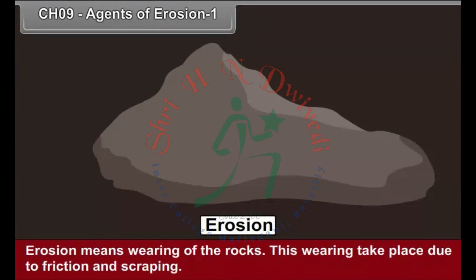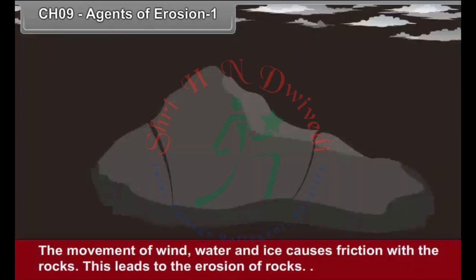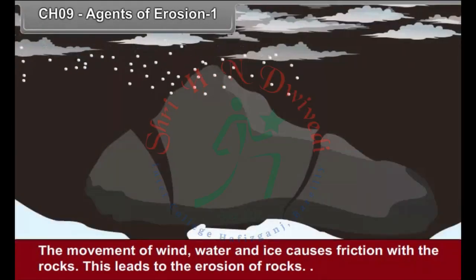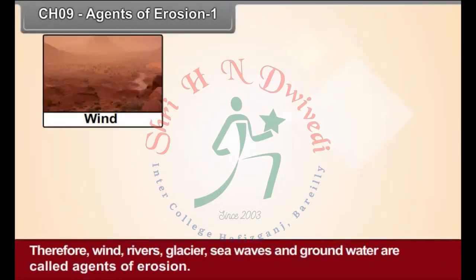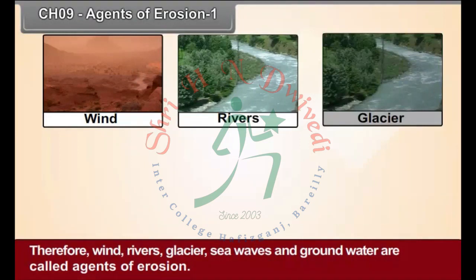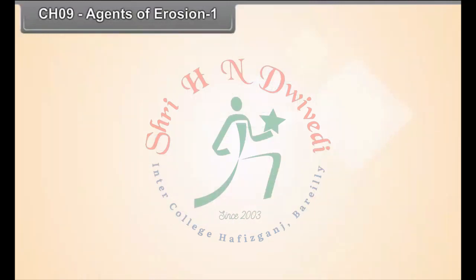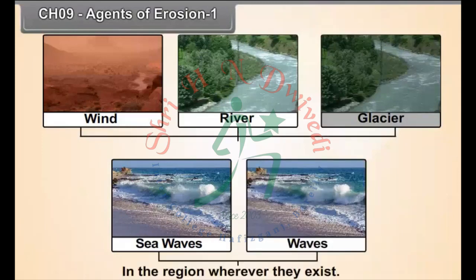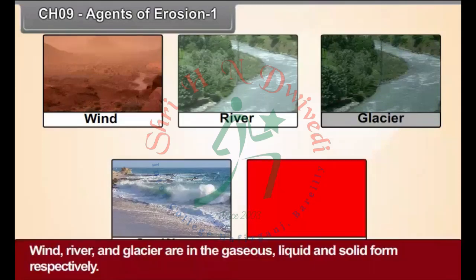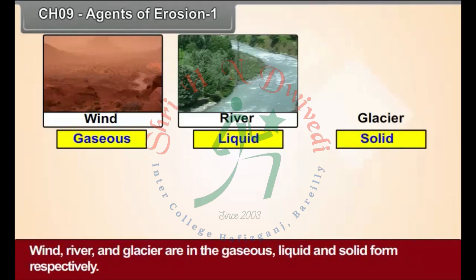Erosion means wearing of the rocks. This wearing takes place due to friction and scraping. The movement of wind, water and ice causes friction with the rocks, which leads to the erosion of rocks. Therefore, wind, rivers, glaciers, sea waves and groundwater are called agents of erosion. Wind, river and glacier are in the gaseous, liquid and solid form respectively.